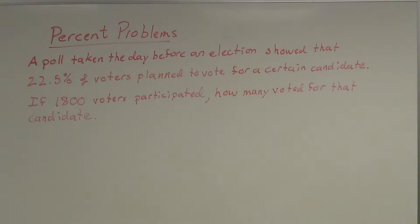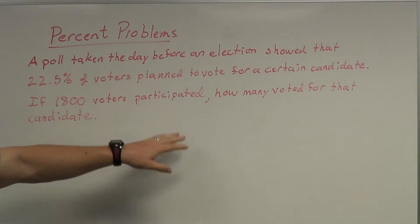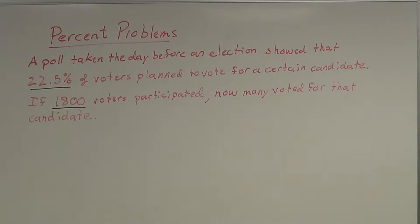A poll taken the day before an election showed that 22.5% of voters plan to vote for a certain candidate. If 1,800 voters participated, how many voted for that candidate? When you have these types of percent problems, you need to look through the problem and identify certain pieces of it — mainly just the numbers. The two that jump out are 22.5% and 1,800 voters, and we're going to use those somehow to figure out this percent problem.